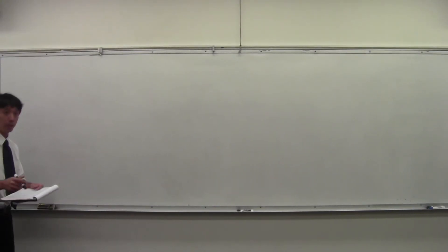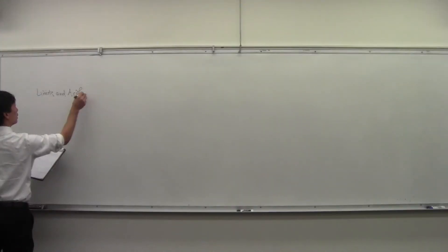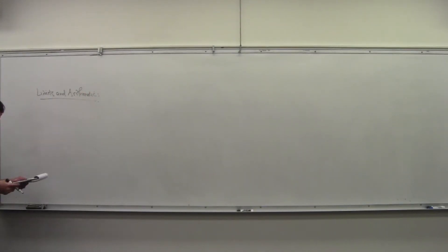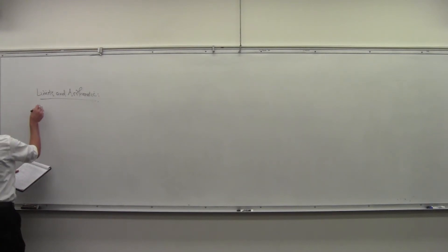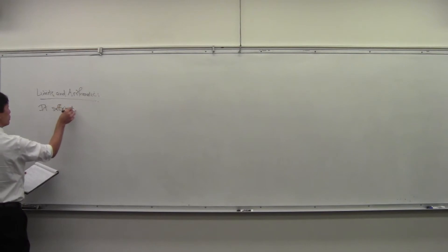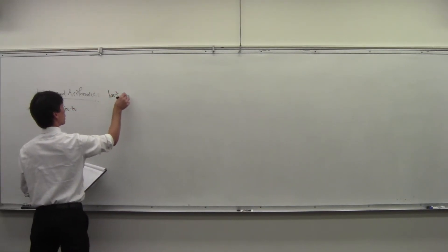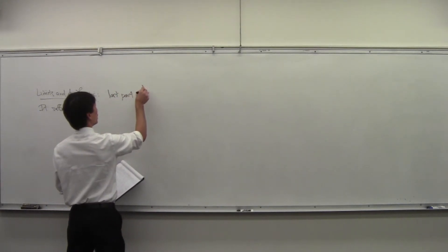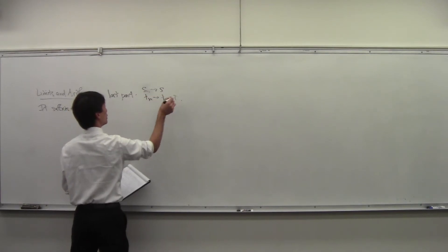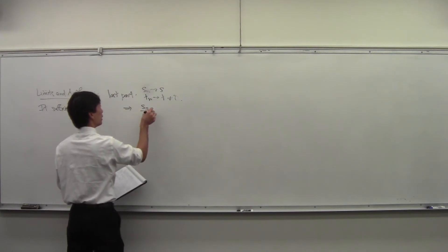We have one piece of the limits and arithmetic theorem left, and that is the one that people were trying to use just now — the quotients. So we're still doing the limits and arithmetic theorem. The last part is: if s_n goes to s and t_n goes to t, and t is not equal to zero, then s_n over t_n goes to s over t. So that's what we want to show.